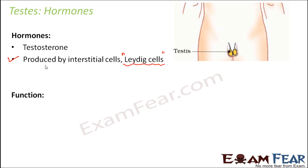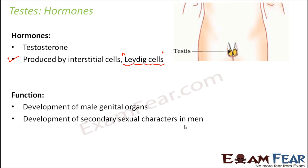Testosterone helps in the development of male genital organs — all the male sex organs which participate in the process of reproduction. It also brings about the development of secondary sexual characters in men, such as aggressiveness, the presence of beard or moustache, facial hair, muscular growth, and the lower pitch of the male voice. That is why some females who have elevated levels of these hormones may tend to have facial hair or slight hair growth near their chin.